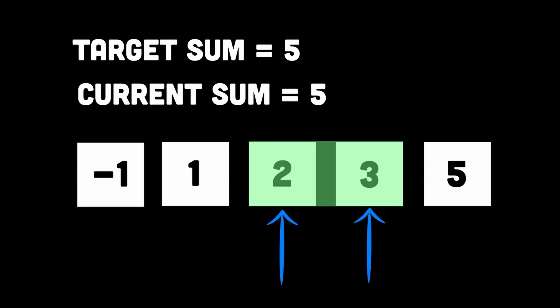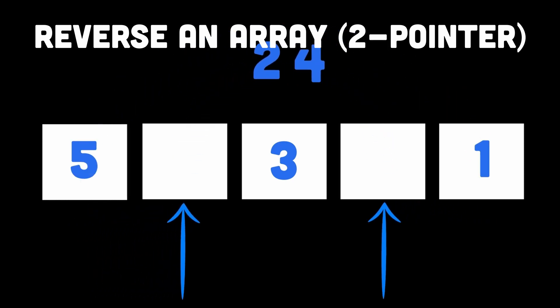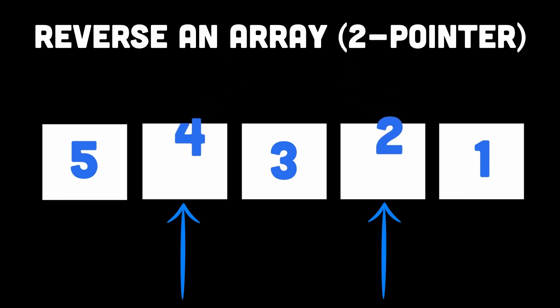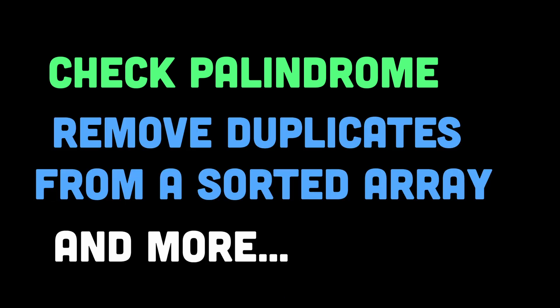The two-pointer approach can also be used to reverse elements in an array, where you initialize two pointers — one at the beginning and one at the end — then swap the elements pointed by the two pointers, and increment the first pointer and decrement the second pointer until they meet in the middle. You can also use the two-pointer approach to check palindromes, remove duplicates from a sorted array, and many more.